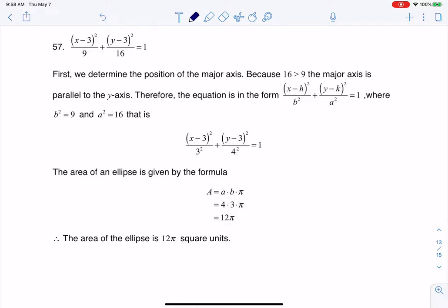And here they were asked to find the area of an ellipse, and they told us the area formula for an ellipse is a times b times pi. So all I need to do is identify a and b, and we can pick them up right here.